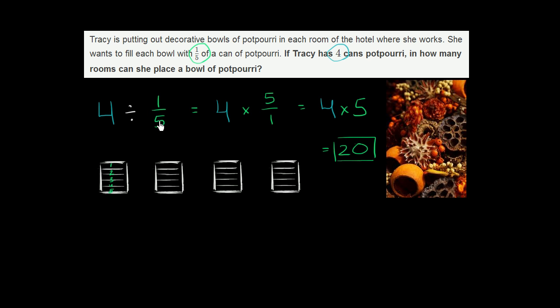Dividing by 1/5 is the same thing as multiplying by the reciprocal of 1/5, which is 5 over 1. So she can fill up 20 bowls of potpourri.